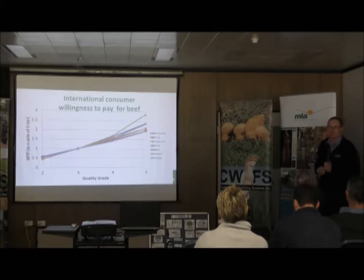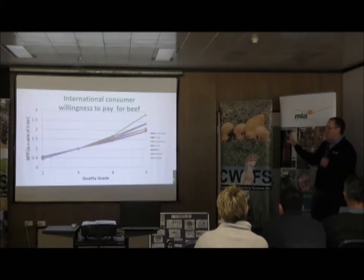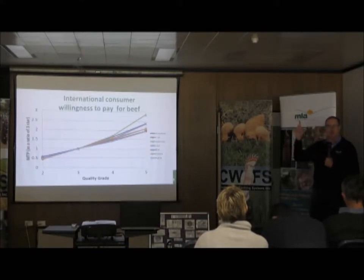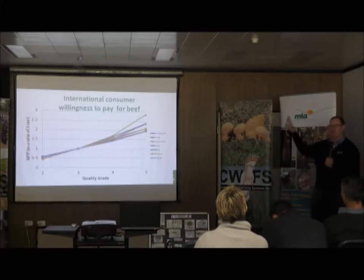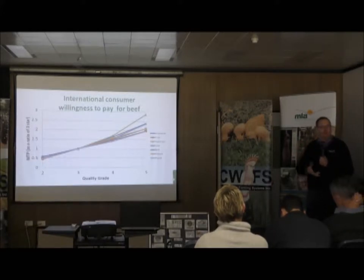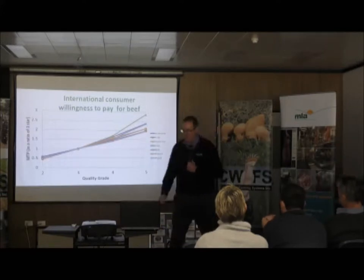I wanted to open with that because when we talk about X-rays and carcass yield, one thing we have to manage is that the relationship between carcass yield and eating quality is a negative, undesirable relationship. If we select for really high-yielding carcasses, we will also select for less eating quality over time. That doesn't mean we can't select for both simultaneously, but we have to do so in a managed manner — just as selecting for high growth rate indirectly selects for high birth weight unless you manage them together.